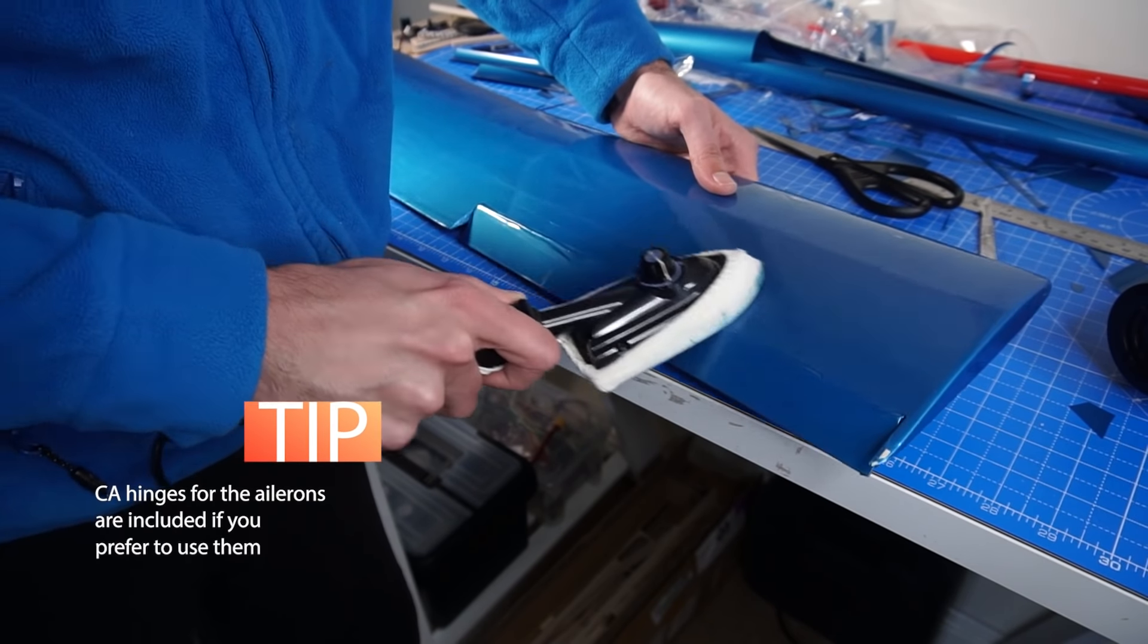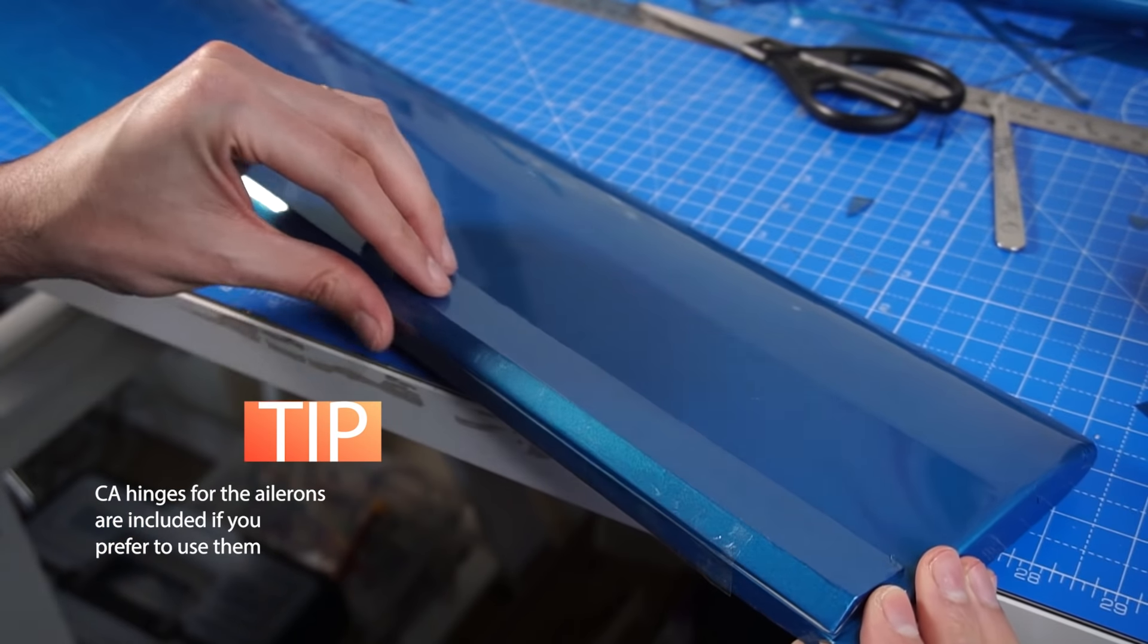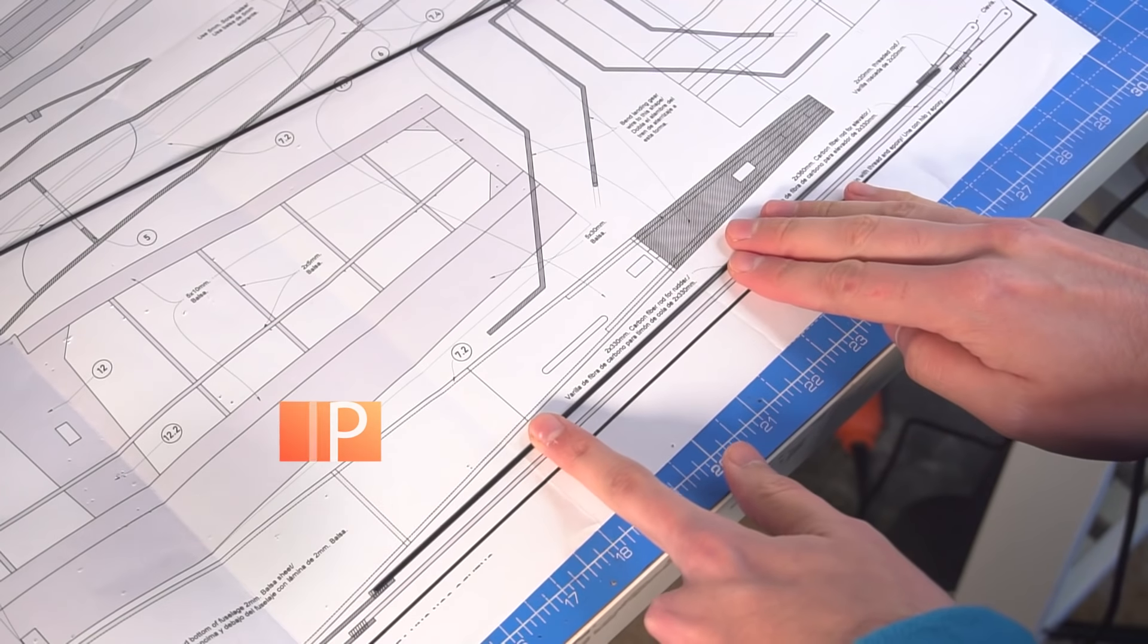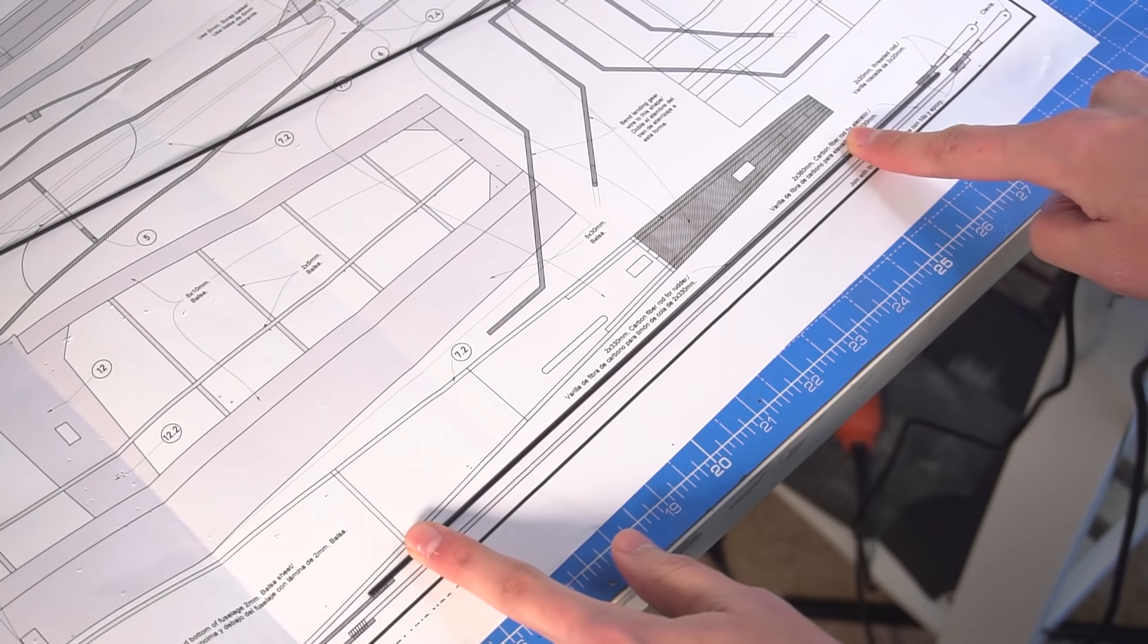To attach the ailerons I'm using some more film but I actually recommend using some clear tape and that worked just fine. Now we're going to work on the push rods and control horns, all of this hardware is included in the kit.